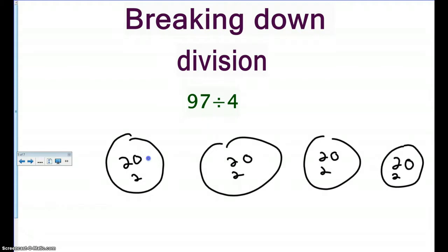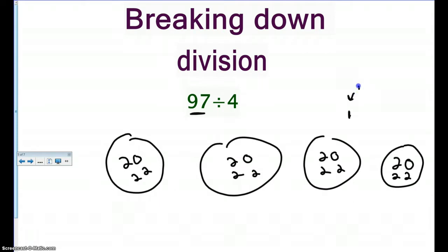I'm going to try counting by twos again: eighty-eight, ninety, ninety-two, ninety-four, ninety-six. I'm only at ninety-six but I need to get to ninety-seven — I have one left over. Do I split it into fourths? No — this is going to be called your remainder. So you count how much is in one circle: twenty, twenty-two, twenty-four, with a remainder of one.